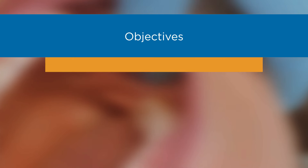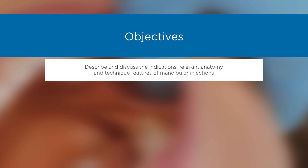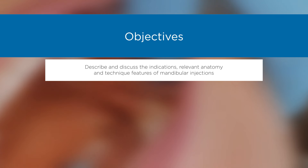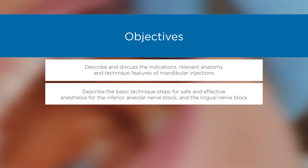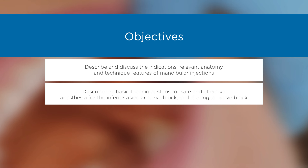Objectives: Describe and discuss the indications, relevant anatomy, and technique features of mandibular injections. Describe the basic technique steps for safe and effective anesthesia for the inferior alveolar nerve block and the lingual nerve block.